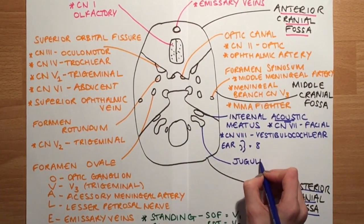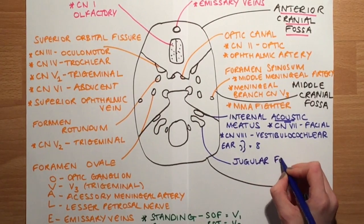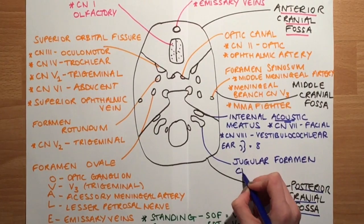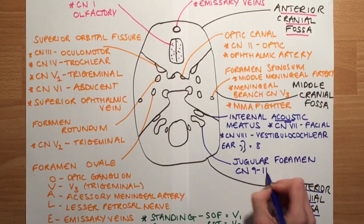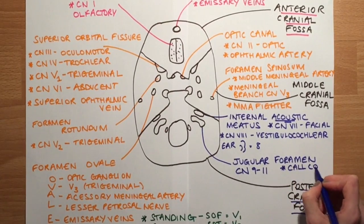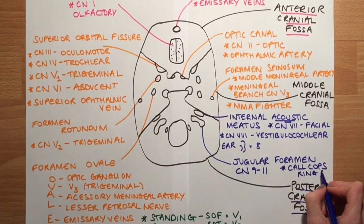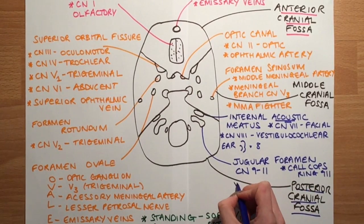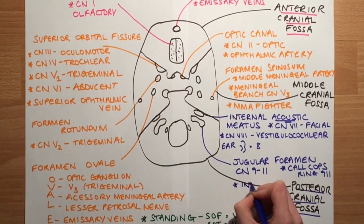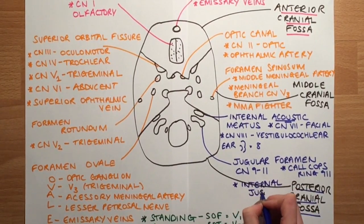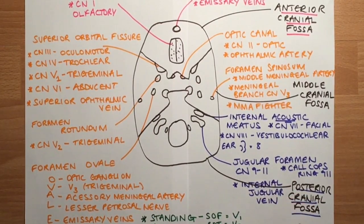The next foramen is the jugular foramen, which transmits three cranial nerves: cranial nerves 9 to 11. A good way to remember this is the American emergency number 911 — cranial nerves 9 to 11. It also transmits the internal jugular vein, which runs alongside the internal carotid artery and is the main venous drainage for the skull and cranium.